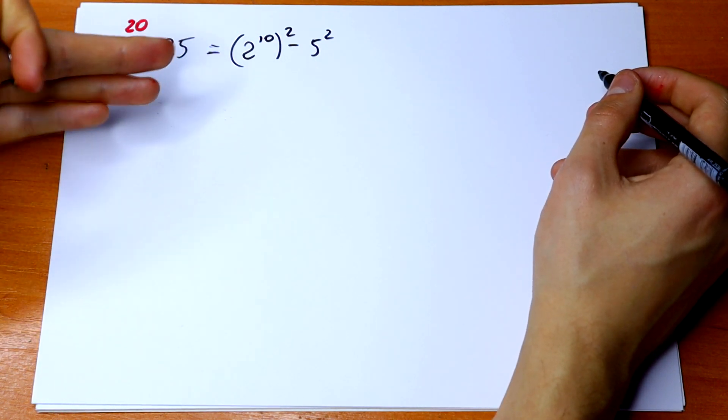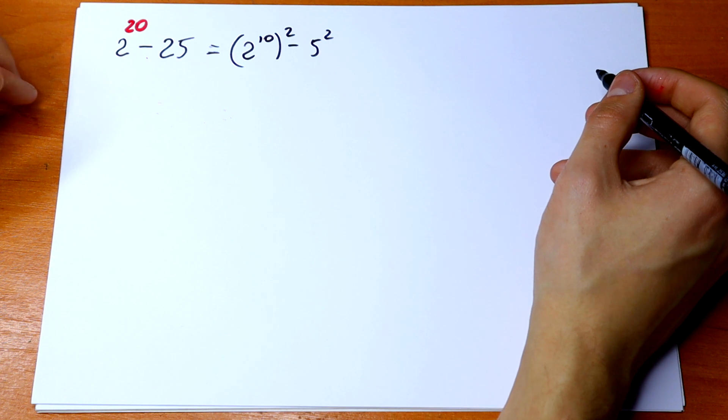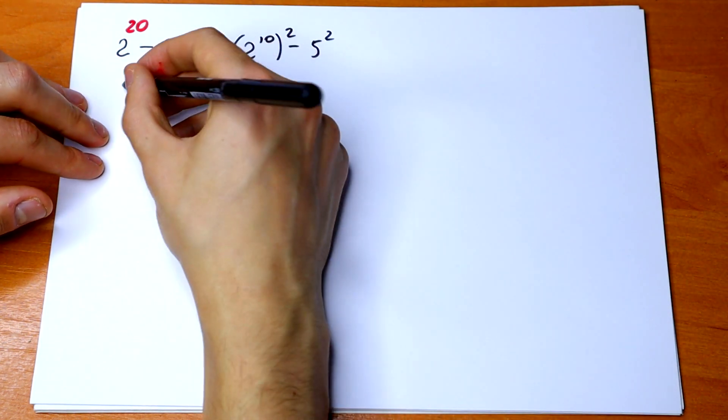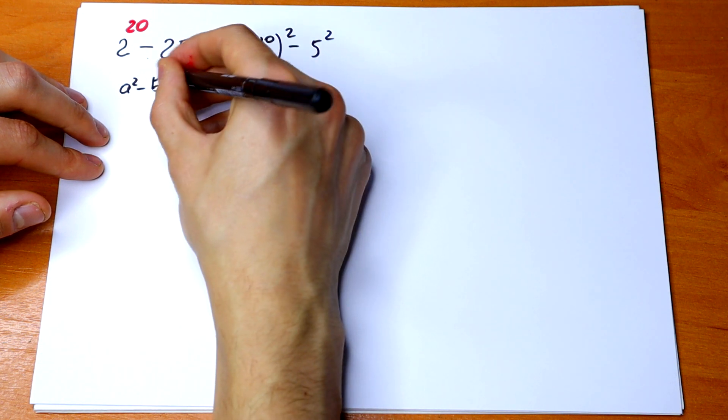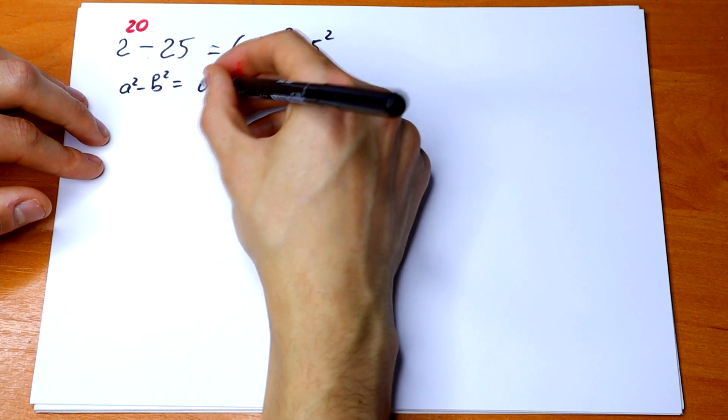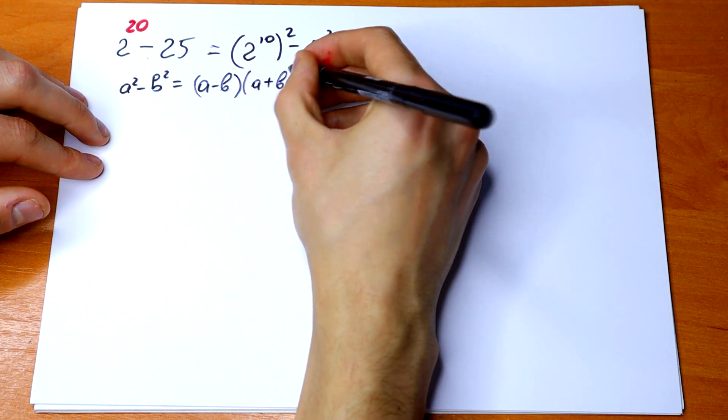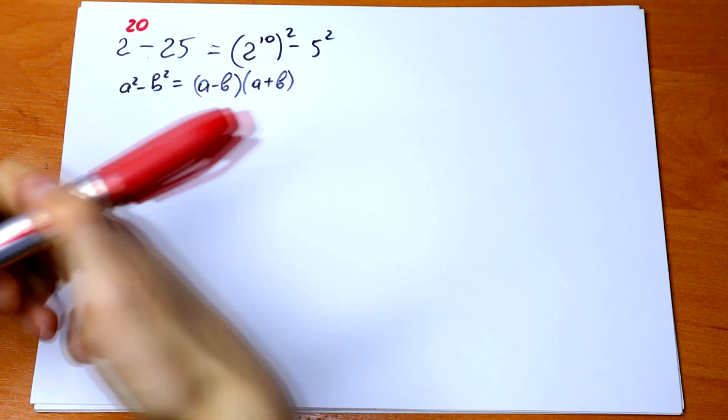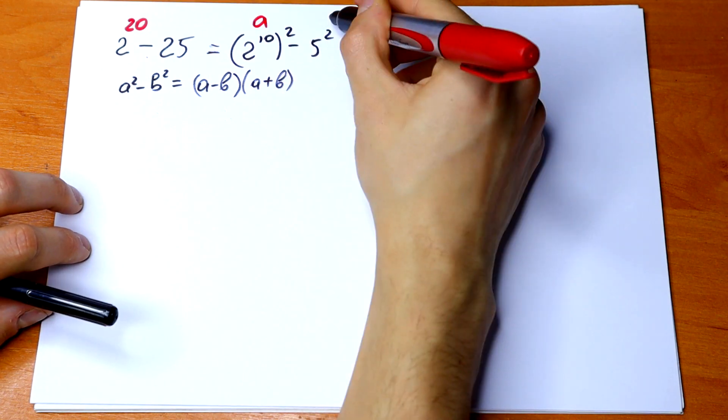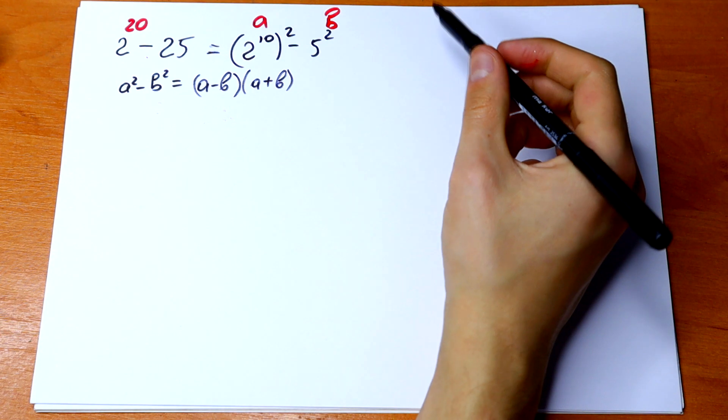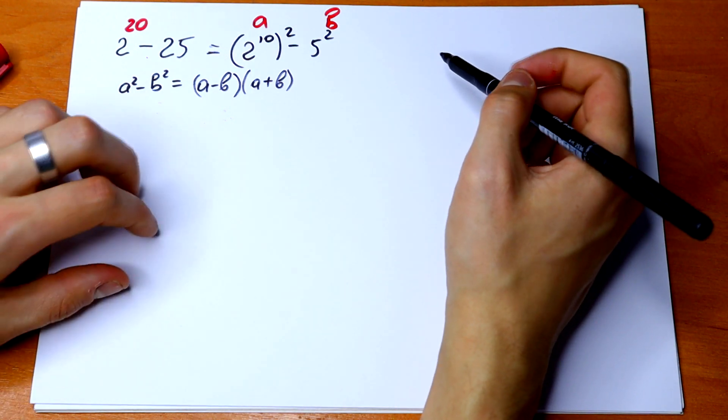So we have a square minus b square. We can split it into an identity. If we have a square minus b square, it can be written as a minus b times a plus b. So this is our a and this is our b. So we can split it into an identity.